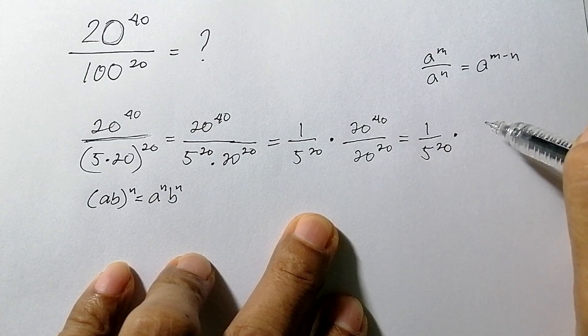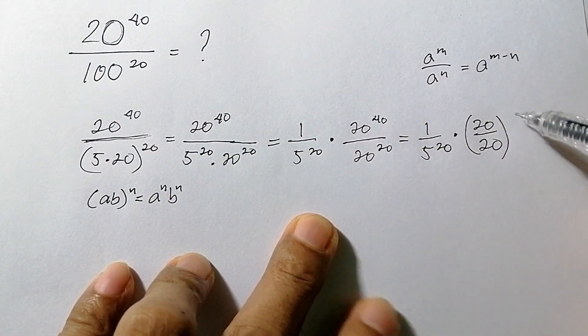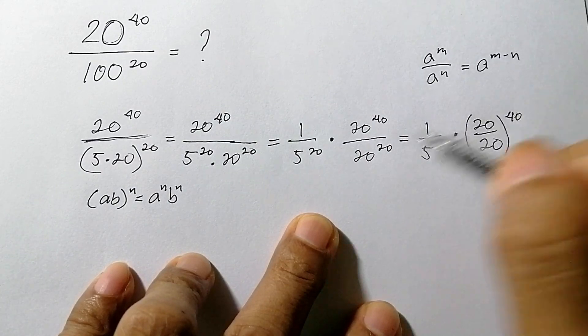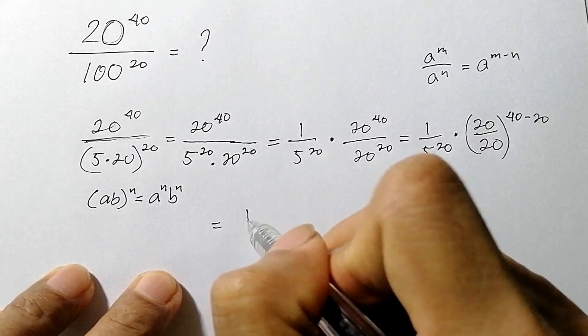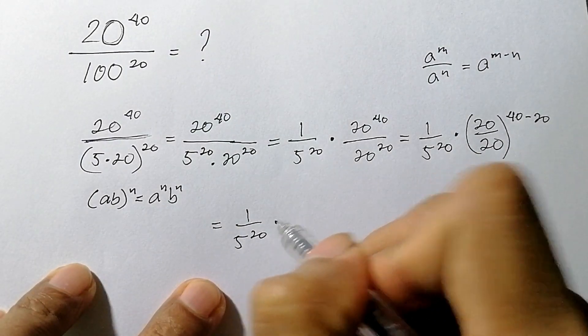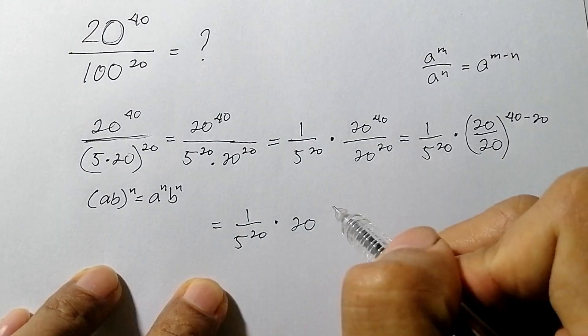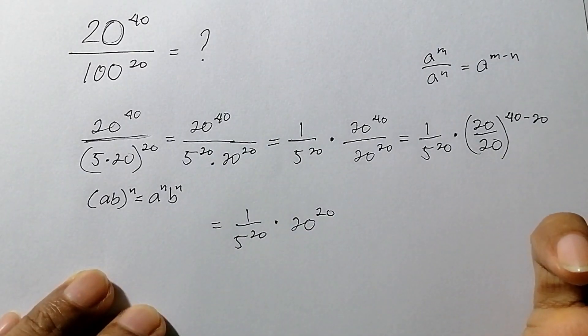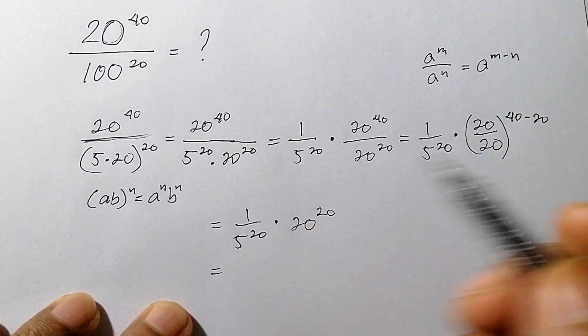So we write 20 over 20, then 40 - the power of 40 minus the power of 20. This will be 1 over 5 raised to 20 times 20 raised to the power 20. 40 minus 20 is 20. Now we multiply this into 1.